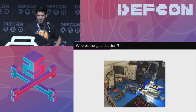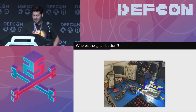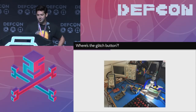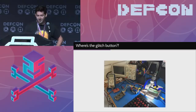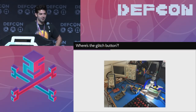So — plug in the KeepKey, press the glitch button, receive Bitcoin, right? Well, it's not that easy. The setup at the end kind of looks like surgery. And a lot like surgery, we only had one mistake to make. We had one KeepKey to work with.